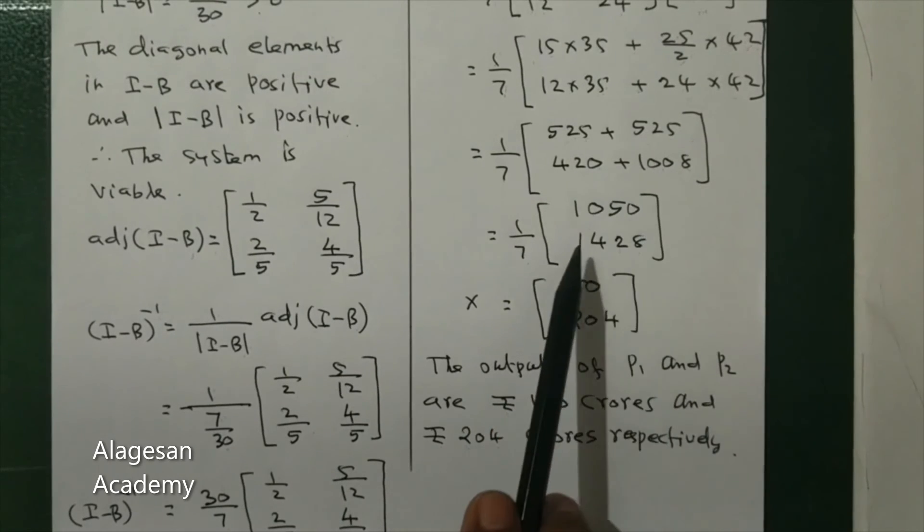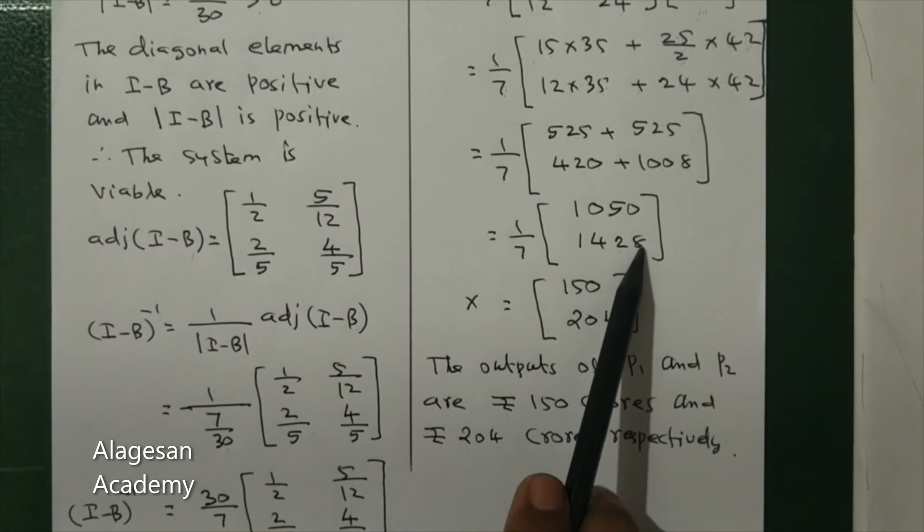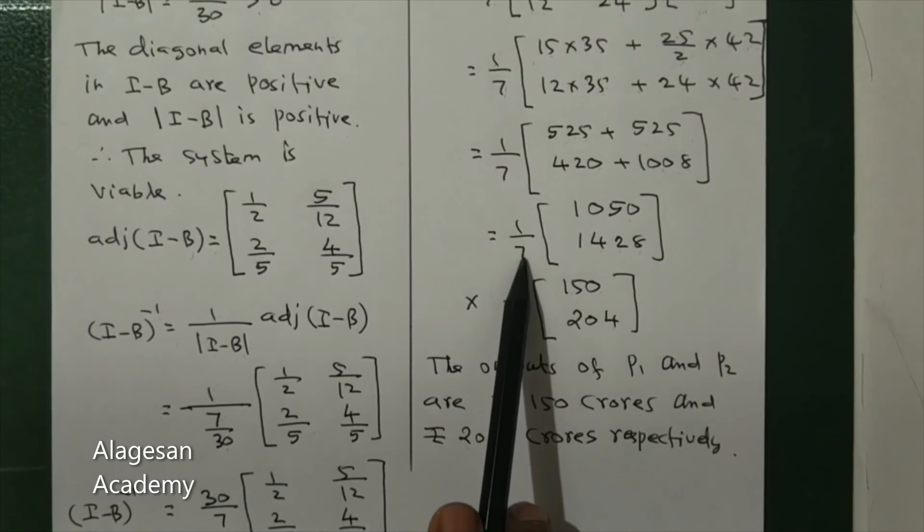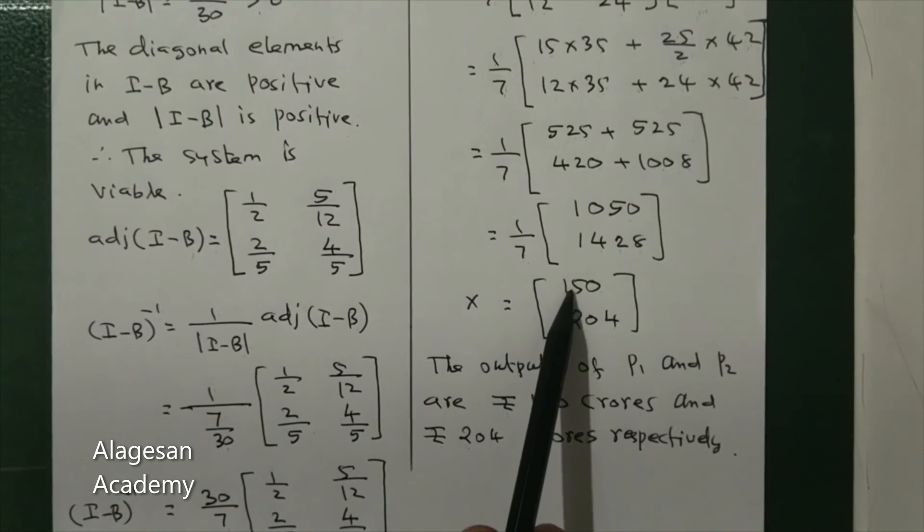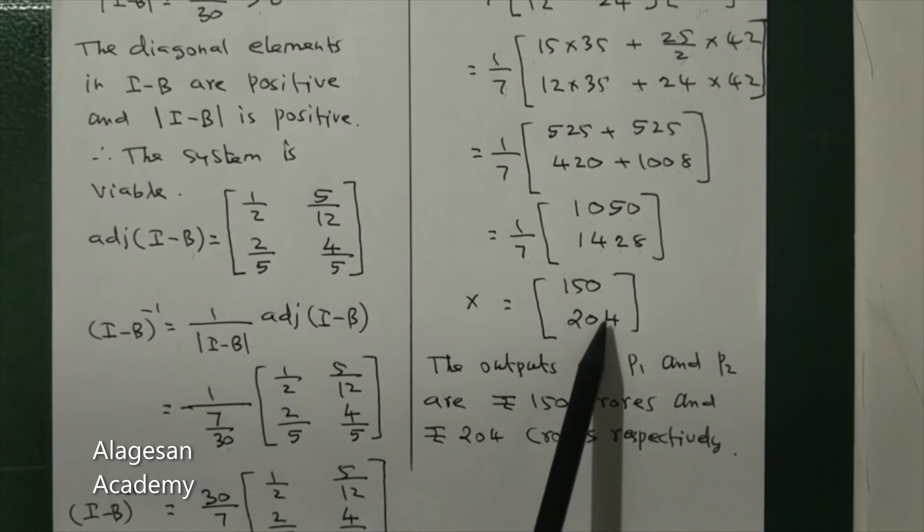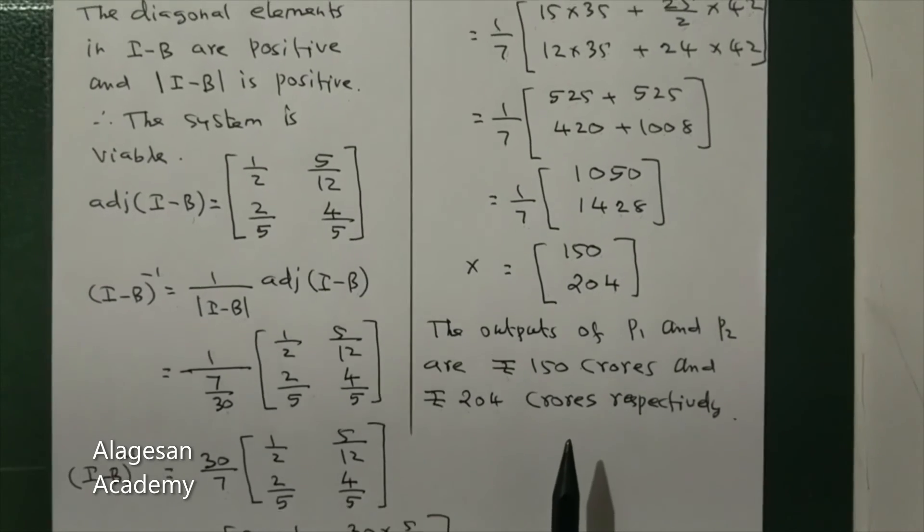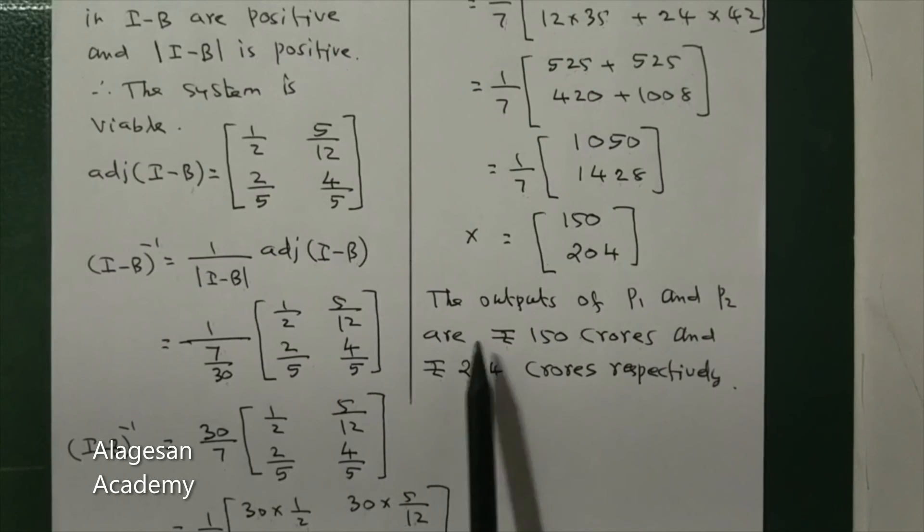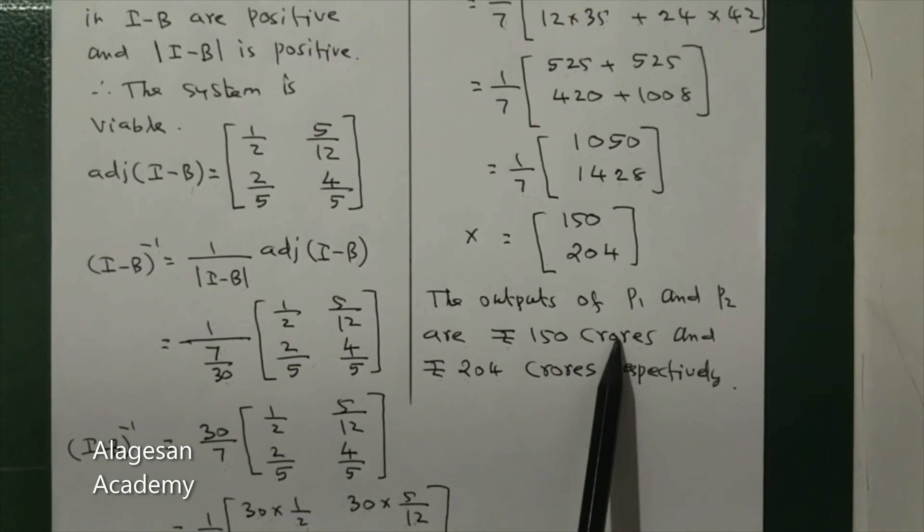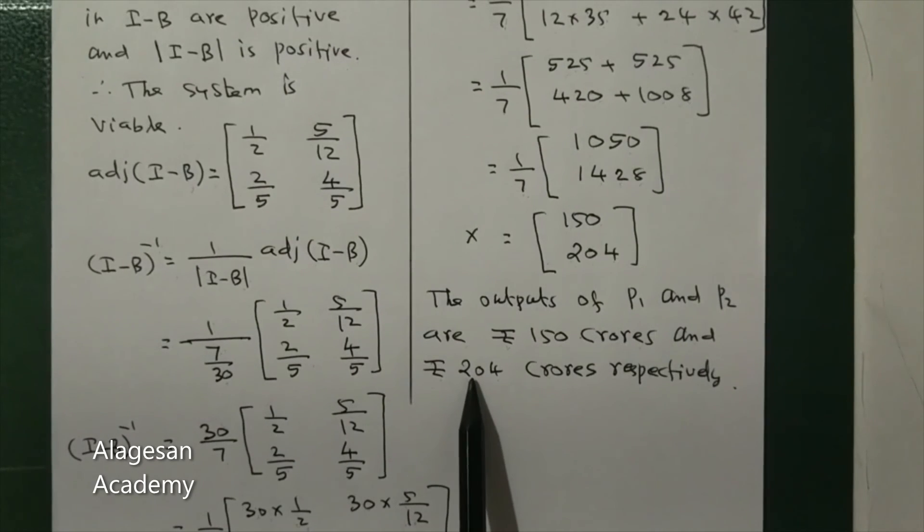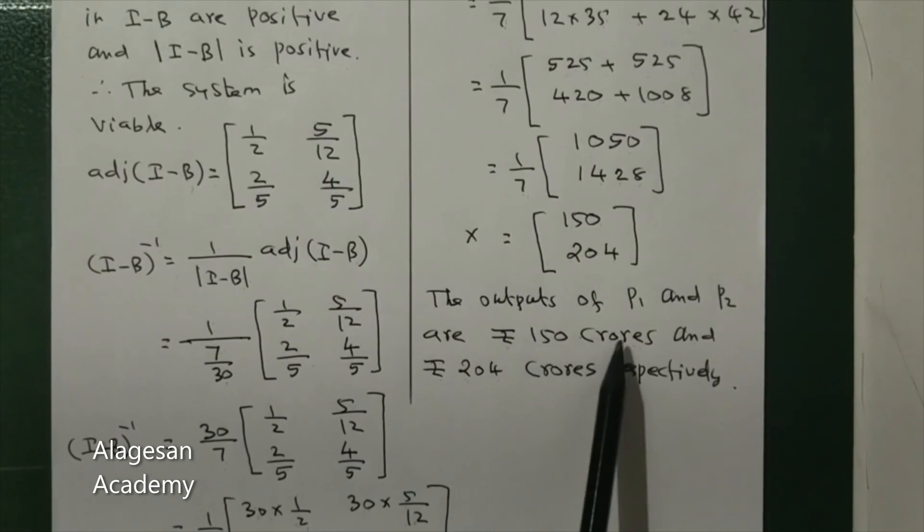1050 plus 1428, then divide by 7. We get 150, 204. So the outputs of P1 and P2 are rupees 150 crores and rupees 204 crores respectively.